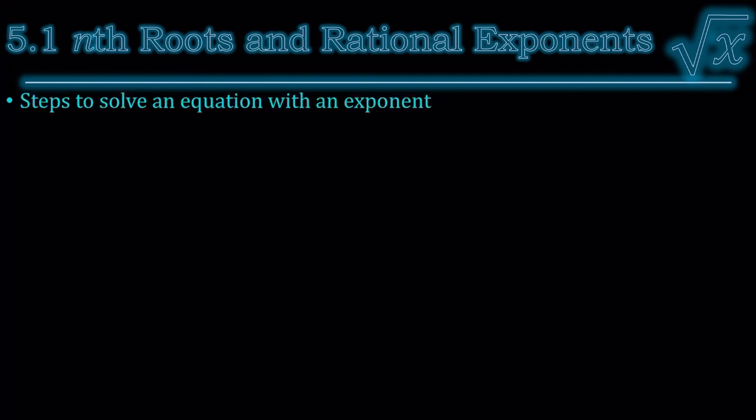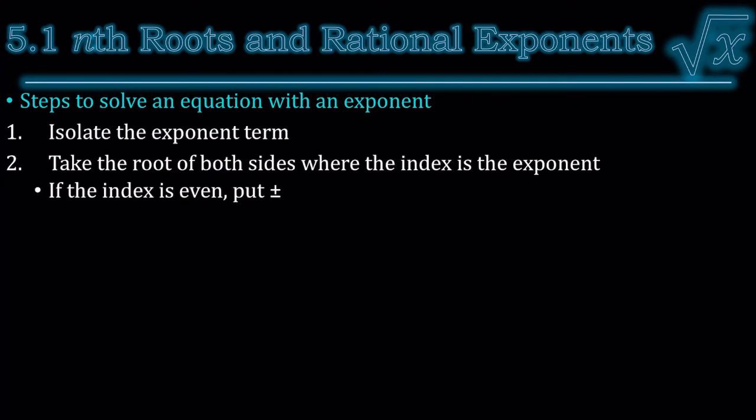We're going to be solving some equations with exponents. So what we do is we isolate the exponent term, and then we take the root of both sides, where the index is the same as the exponent. If the index is even, we have to remember to put plus and minus, because if you square negative, it becomes positive. So if you have that positive number and you need to get the square roots, you don't know whether it's positive or negative. It's actually both. It could be both. Then finish solving and check your answers. Always check your answers.